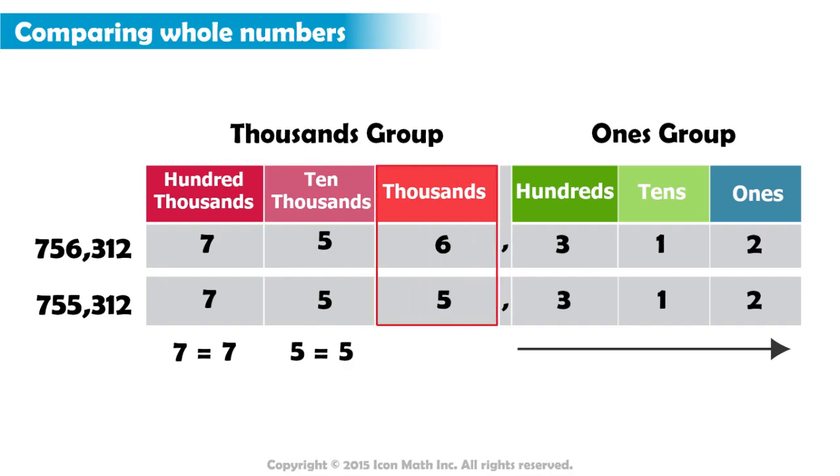So we move to the next place value. There is a 6 in the thousands place in the first number and a 5 in this place in the second number. Both are in the same place, the thousands place, but 6 represents a greater value than 5. Since 6 is greater than 5, we stop the comparison because we know which number is greater.